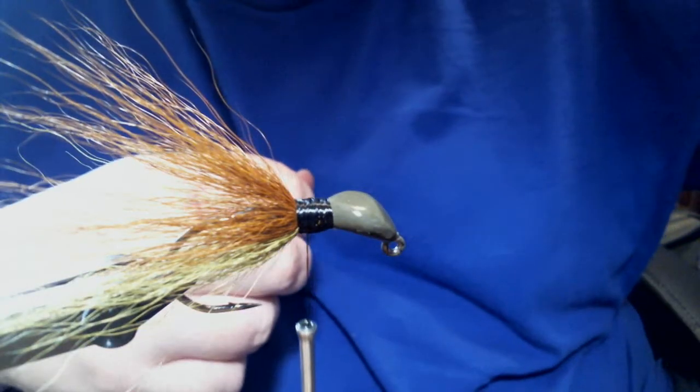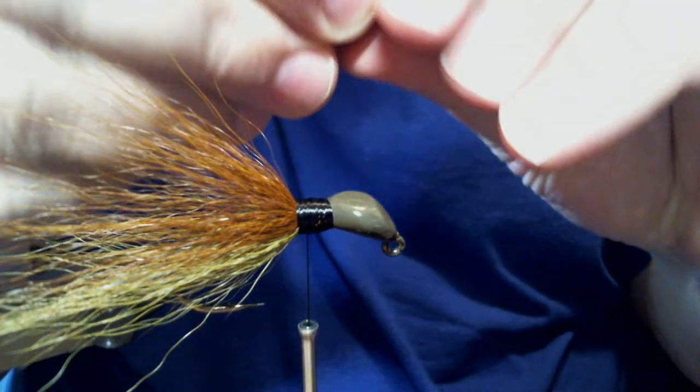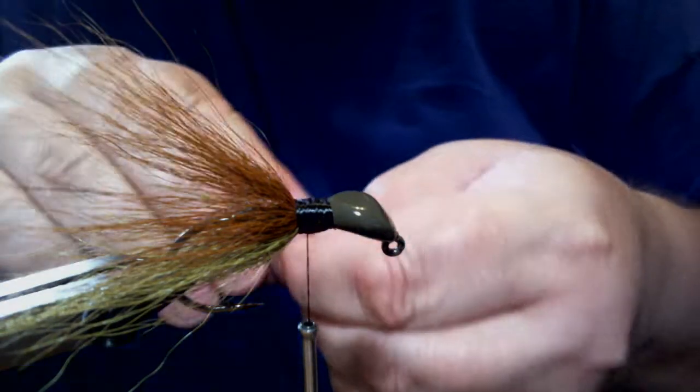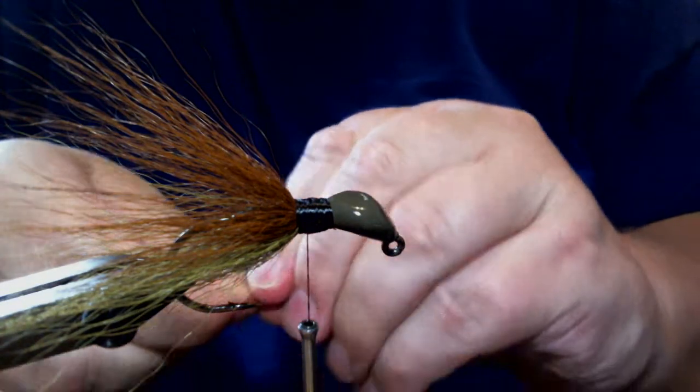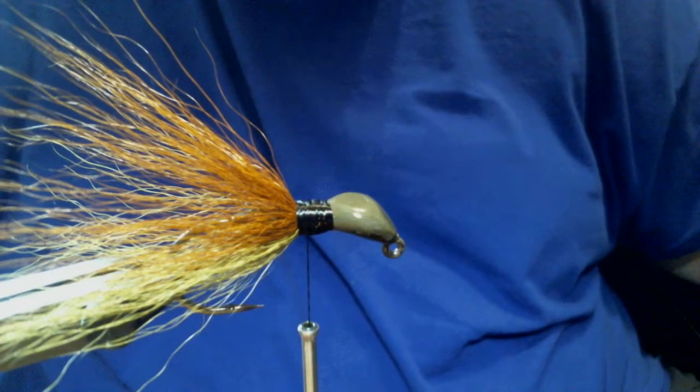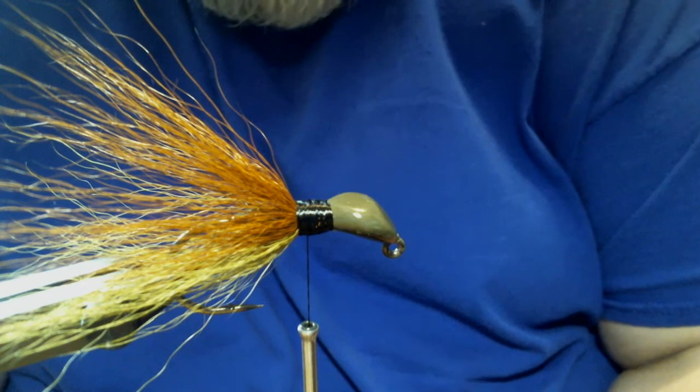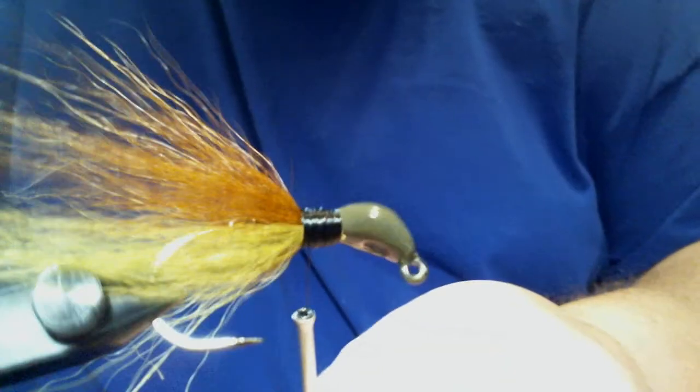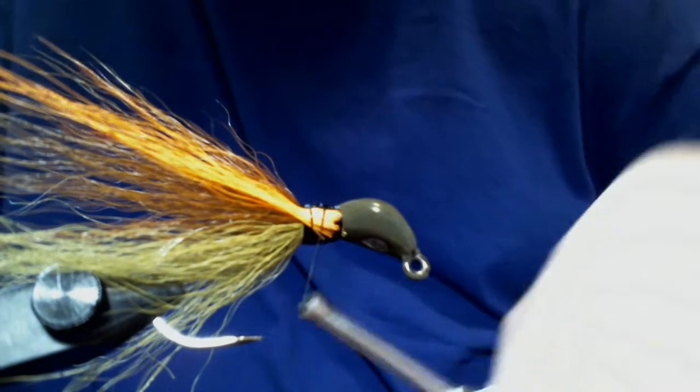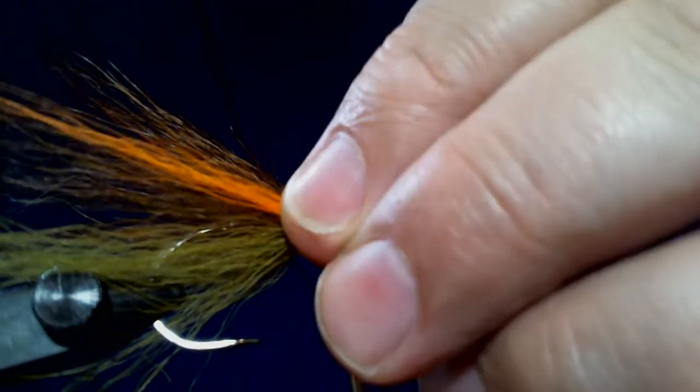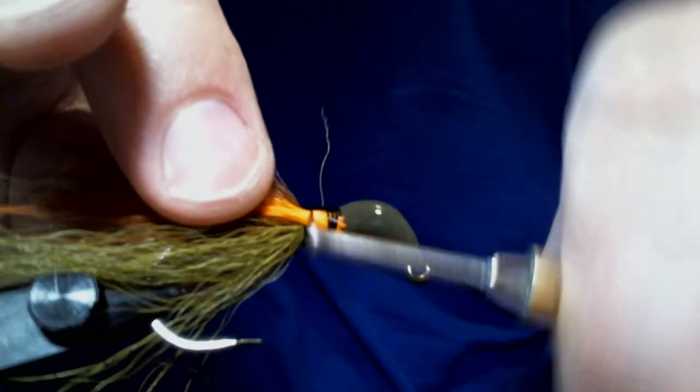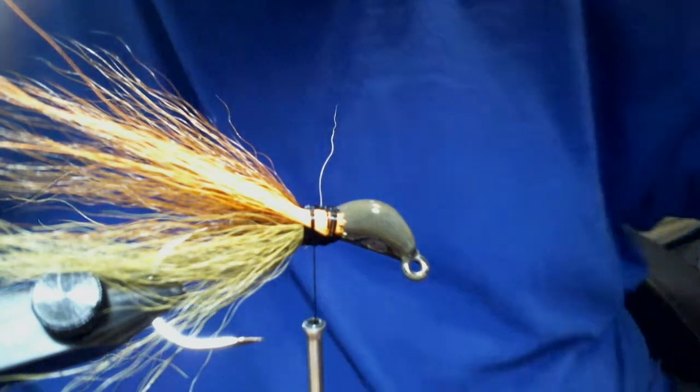We're going to take just a small little bunch of orange bucktail and tie that in. A little bit on each side. A little bit of orange on this, because this late summer, early fall, the craws here, this Allegheny craw, actually has, they have orange-tipped claws. So, I like to have just a little bit of orange in this pattern.